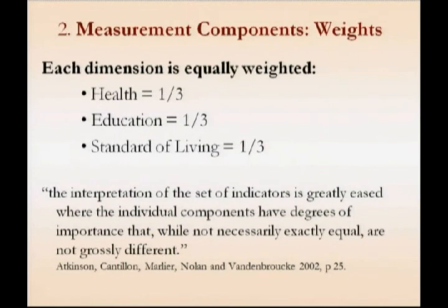We were also following Tony Atkinson's suggestion — mentioned by James — which is that the interpretation of a set of indicators is greatly eased where the individual components have degrees of importance that, while not necessarily exactly equal, are not grossly different. There is certainly an ease in explanation for policy purposes when the weights are equal.